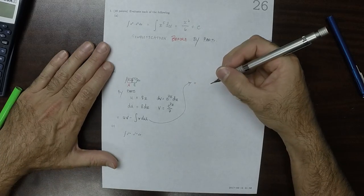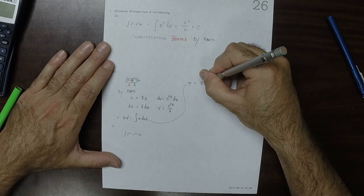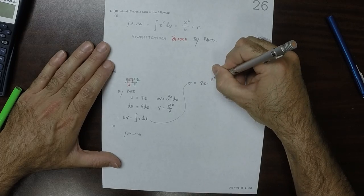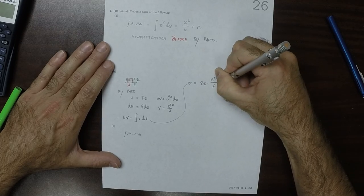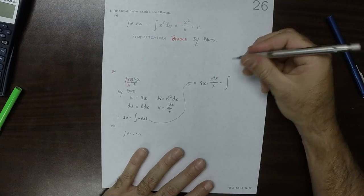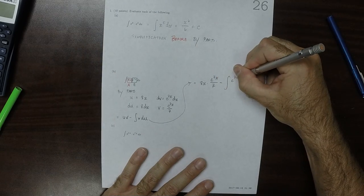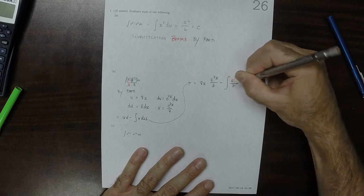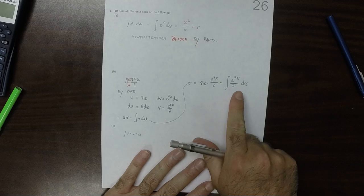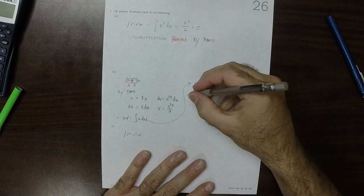And plugging that stuff in over here, that would be 8x times e to 7x over 7, minus antiderivative vdu, so e to 7x over 7 times 8 dx. And then, is that an antiderivative we can do? Sure it is.